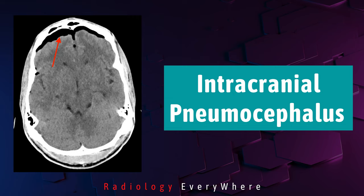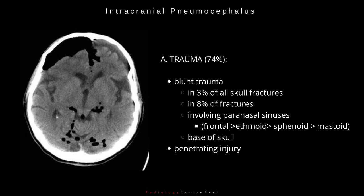What are the causes of intracranial pneumocephalus? The first group is due to trauma, which can be due to blunt trauma or penetrating injuries, involving the paranasal sinuses or base of the skull.